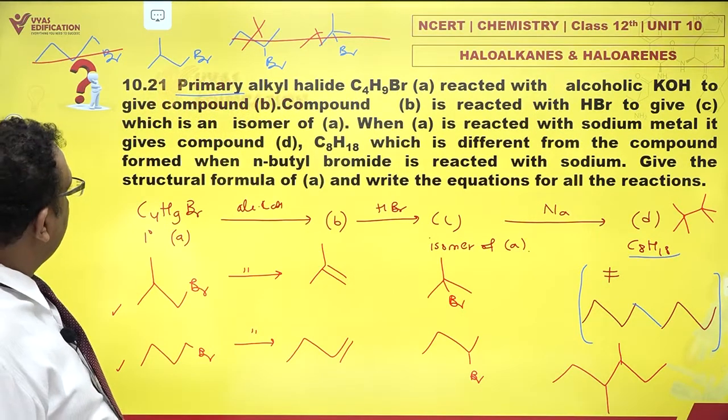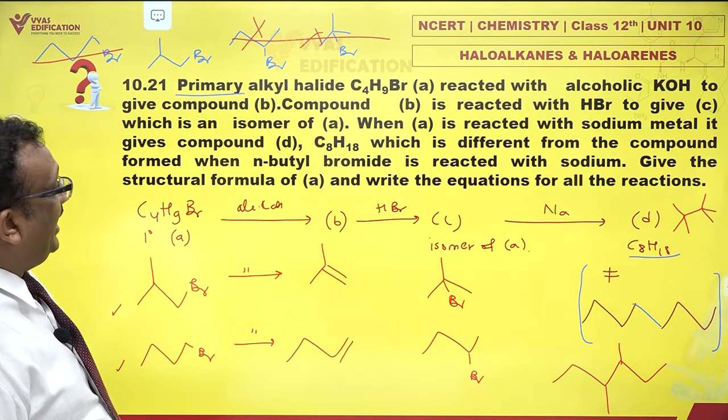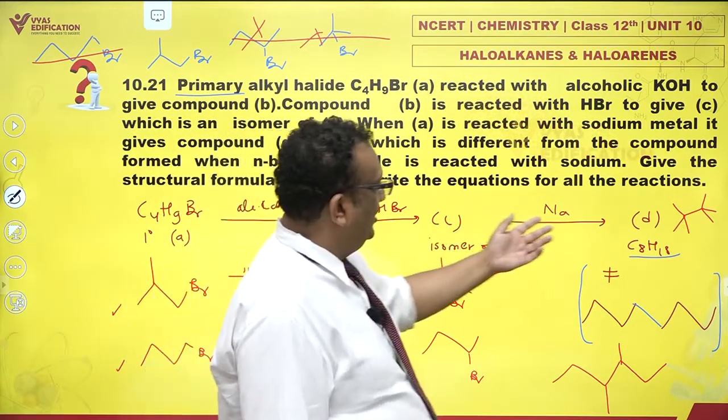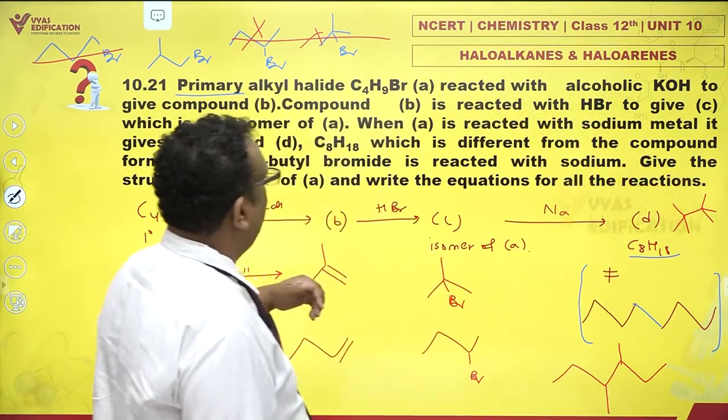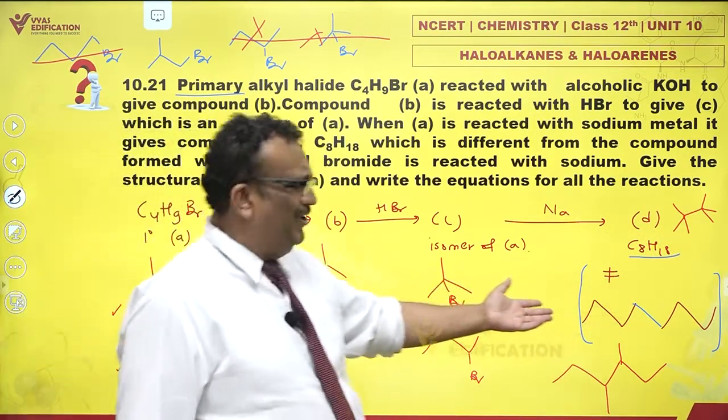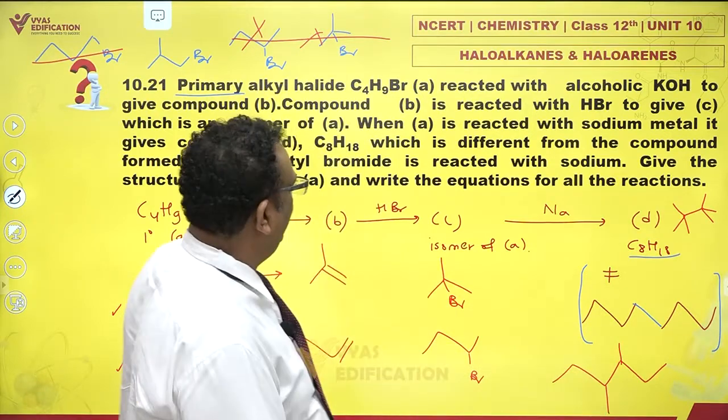What else? When A is reacted with sodium metal, it gives compound D. A with metal gives D, yes, which is different from n-octane. We very well agree it is anyway different from n-octane. Big deal.